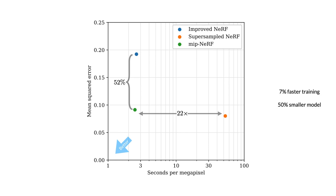Also, MIPNERF is about 7% faster to train than Nerf, and because we only learn a single multi-scale model, MIPNERF has half as many parameters as Nerf.